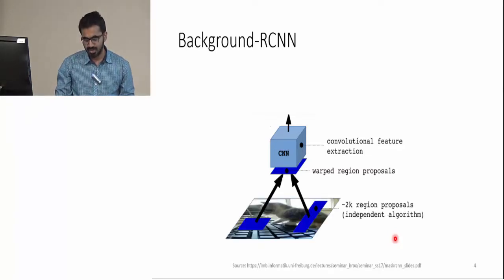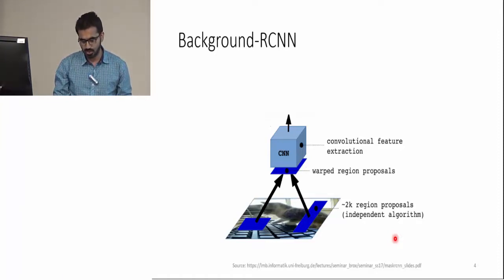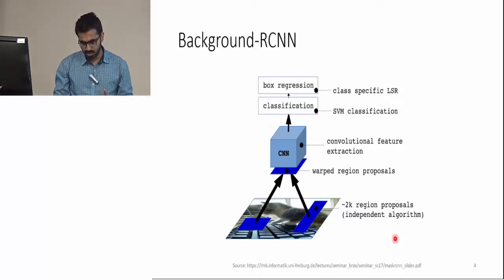Given an input image, a non-deep learning method extracted 2000 object proposal regions, each of which is then resized according to the input of the network. These features are then used to train linear SVM for classification and bounding box regression.